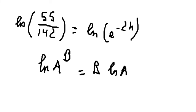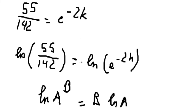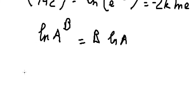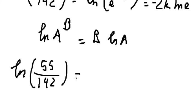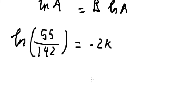So we apply for here and we have negative 2k ln e. Ln e, that's about number 1, so we just have only negative 2k. Now we divide both sides by negative number 2.